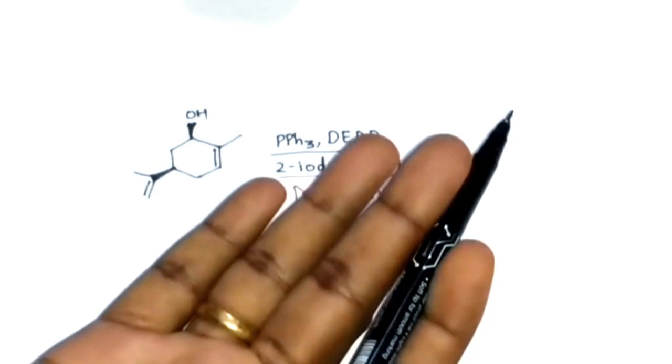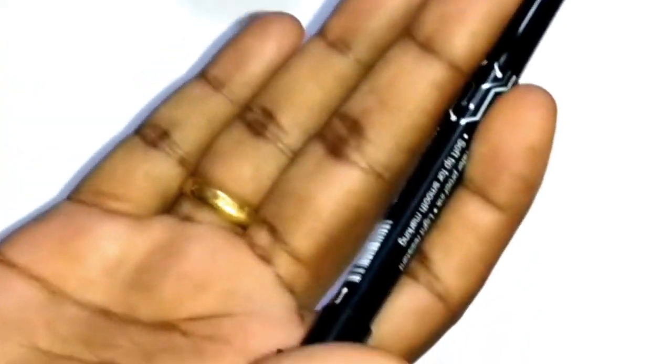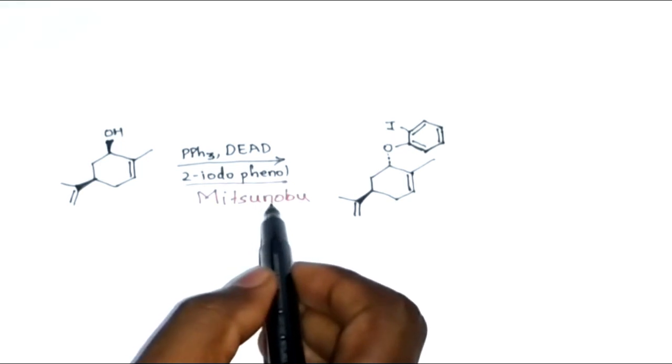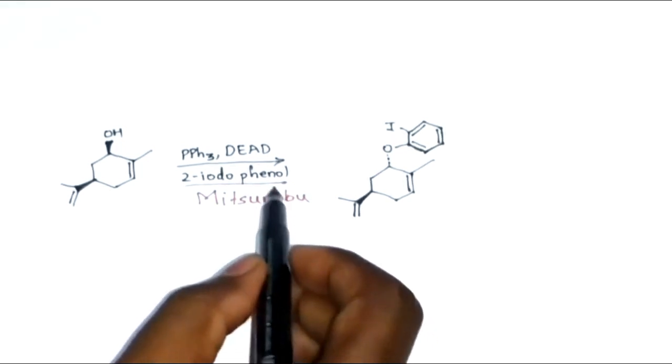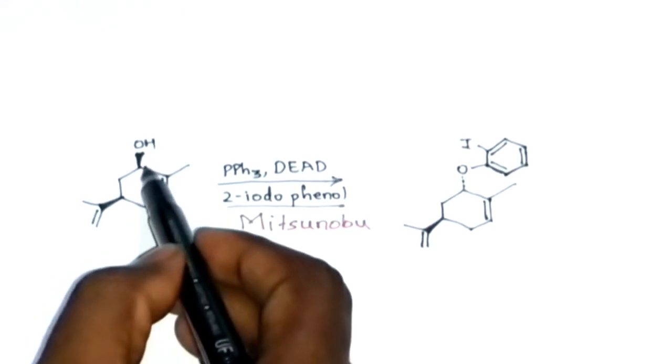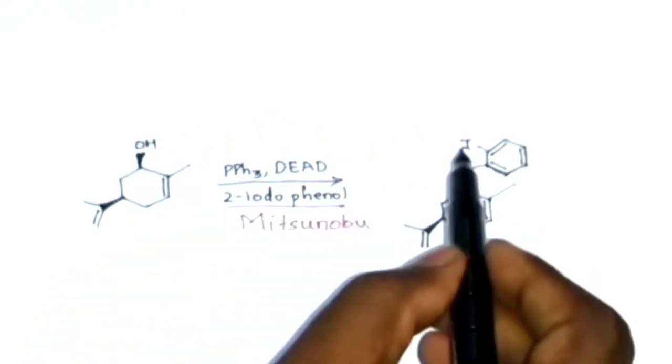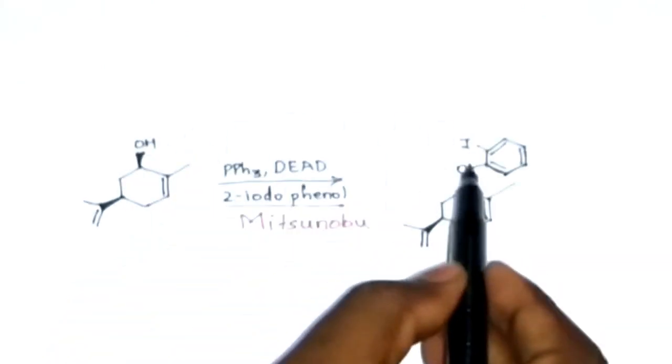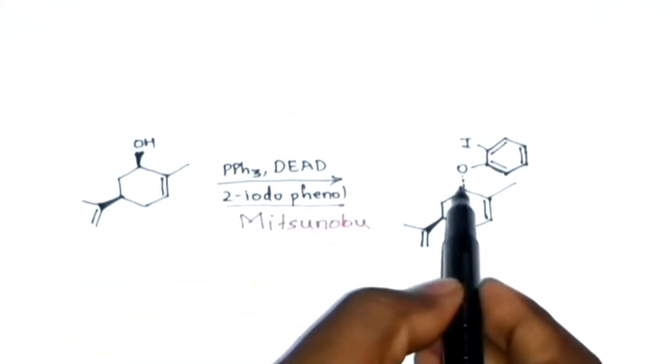In this case, the OH is above the plane of the paper, so the iodophenol will come from below the plane of the paper. The Mitsunobu reaction follows SN2 mechanism. Observe the group here is above the plane of the paper. After the reaction, it is anti to this group, that means it will be below the plane of the paper.